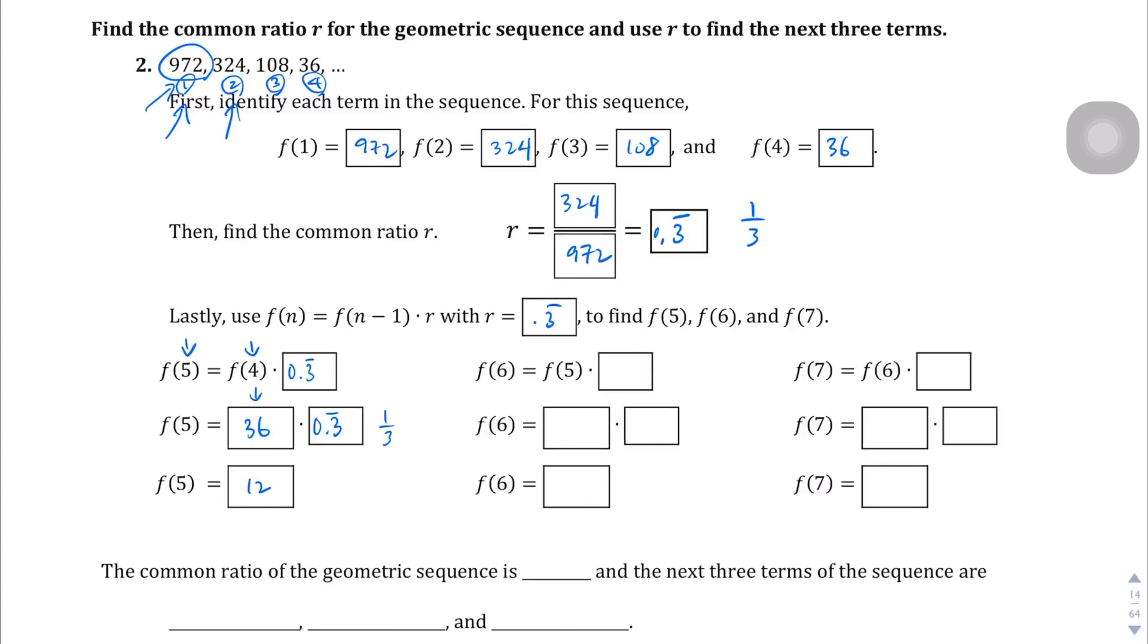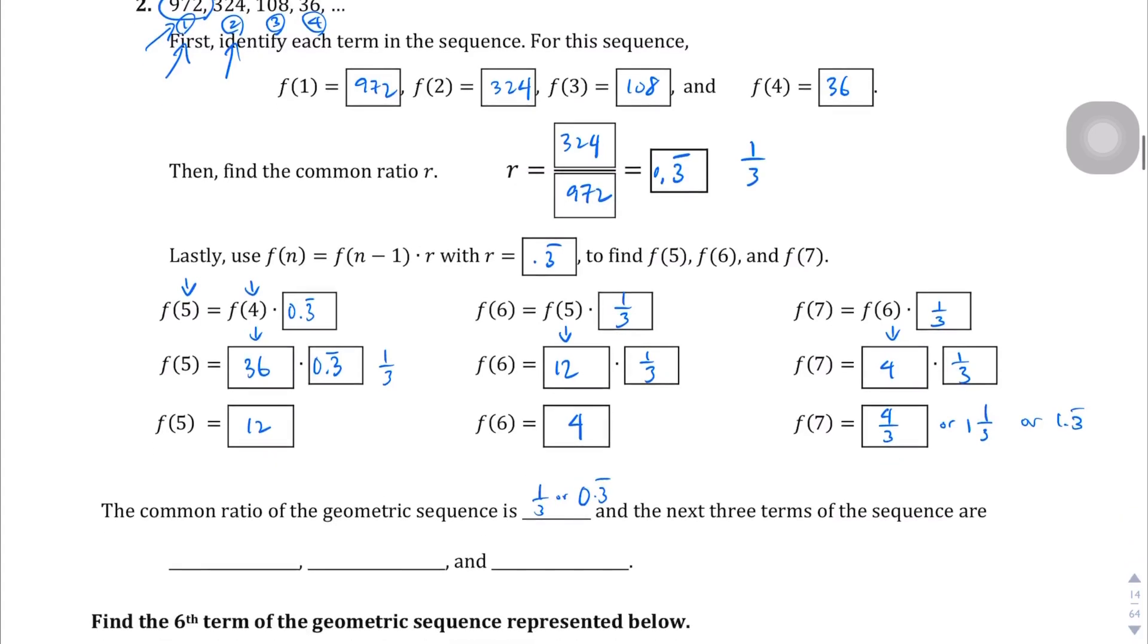So let's keep going. And in fact, I'm going to keep on using the fraction 1/3 just because I want to be as accurate as possible. The fifth term that we just got was 12. 12 times 1/3 is going to be 4. And then continuing on, the fourth term times 1/3 gives me 4/3 or 1.3 repeating. So the common ratio is 1/3 or 0.3 repeating. The next three terms are right here, 12, 4, and 4/3.